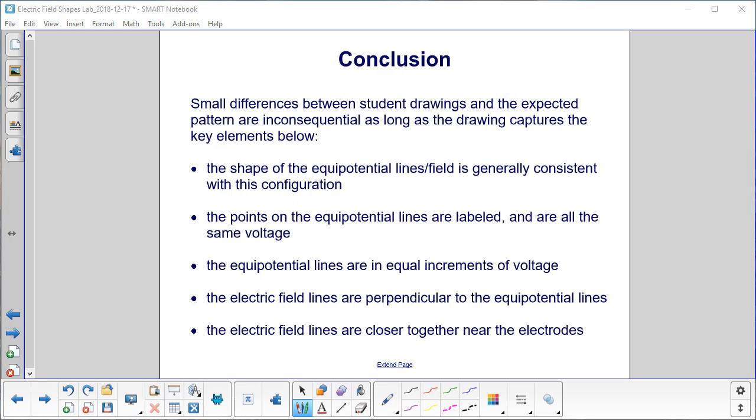Small differences between the student drawings and the expected pattern are inconsequential as long as you have the following key elements. The shape of your equipotential lines is generally consistent with the configuration. The points of the equipotential lines are labeled.